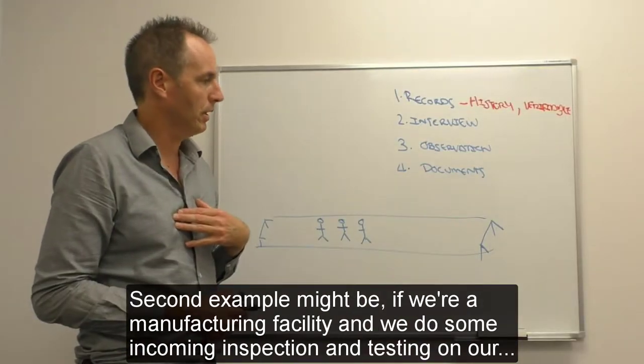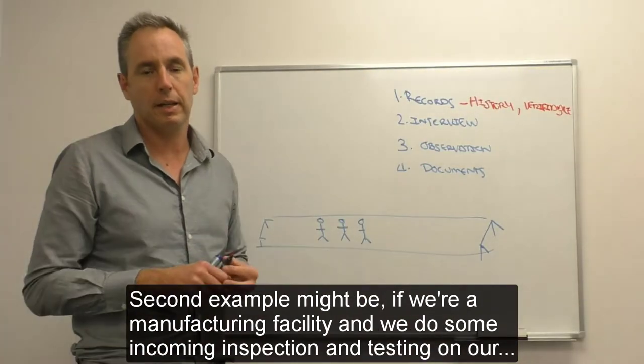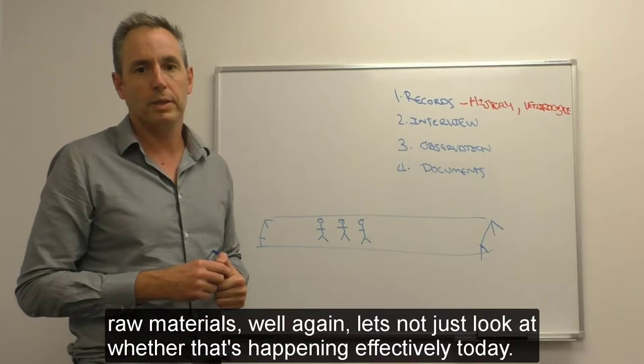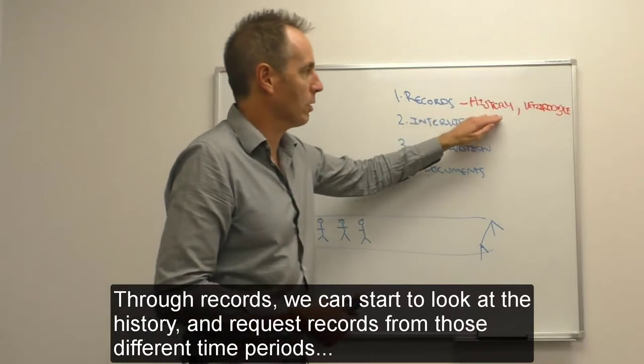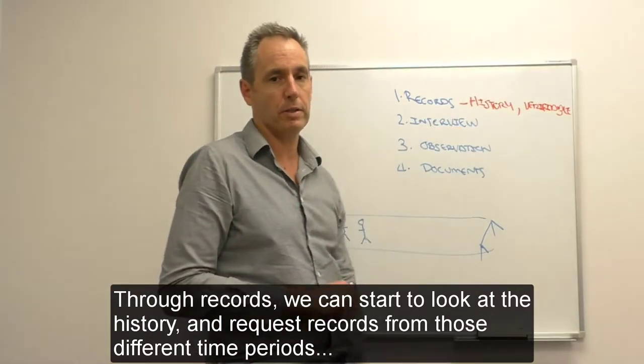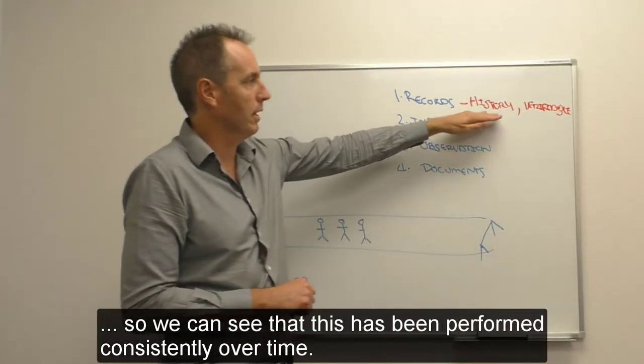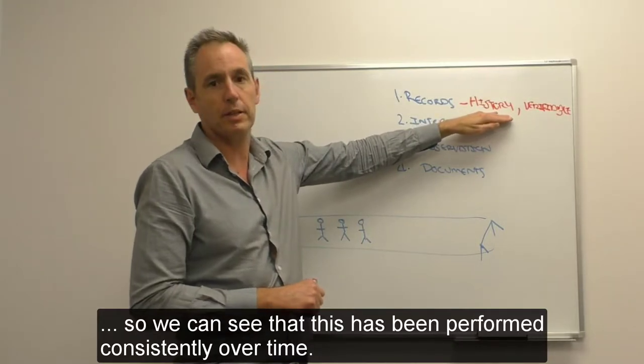Second example might be for a manufacturing facility where we do some incoming inspection and testing on our raw materials. Well again, let's not just look at whether that's happening effectively today. Through records we can start to look at the history and request records from those different time periods so that we can see has that been performed consistently over time.